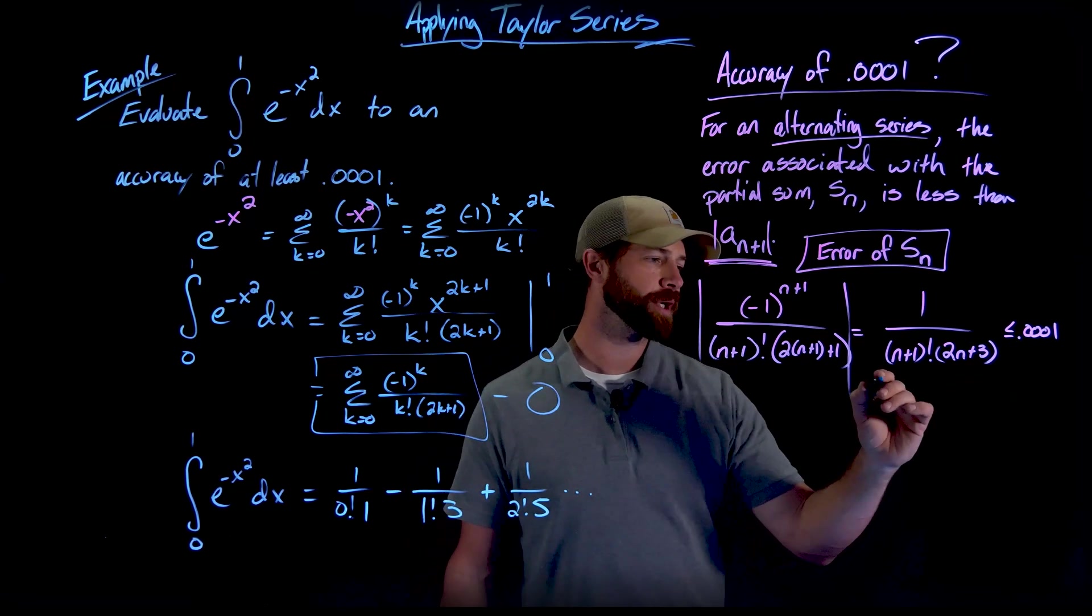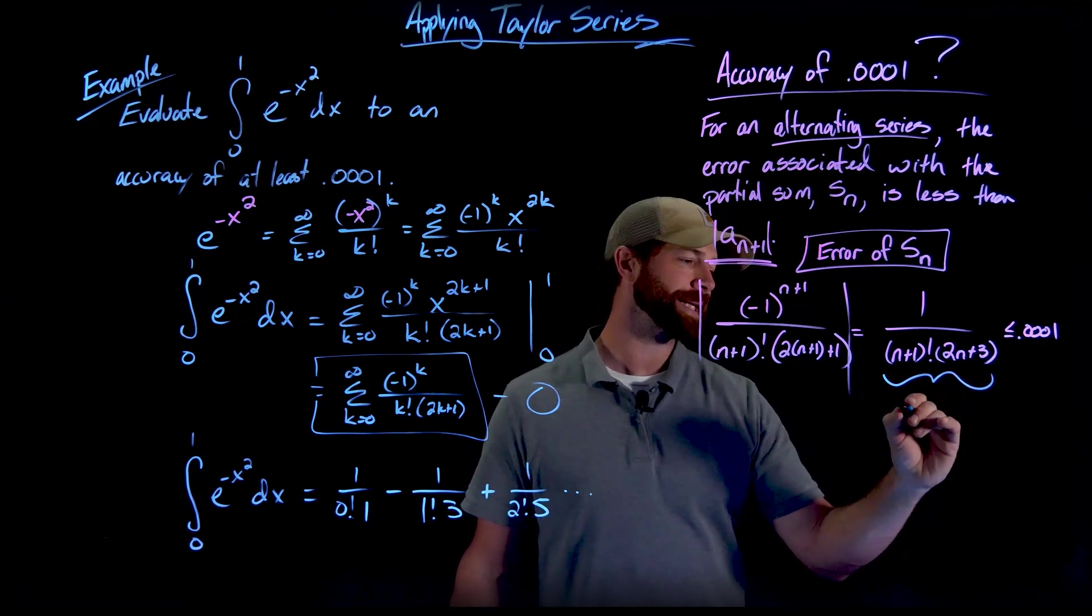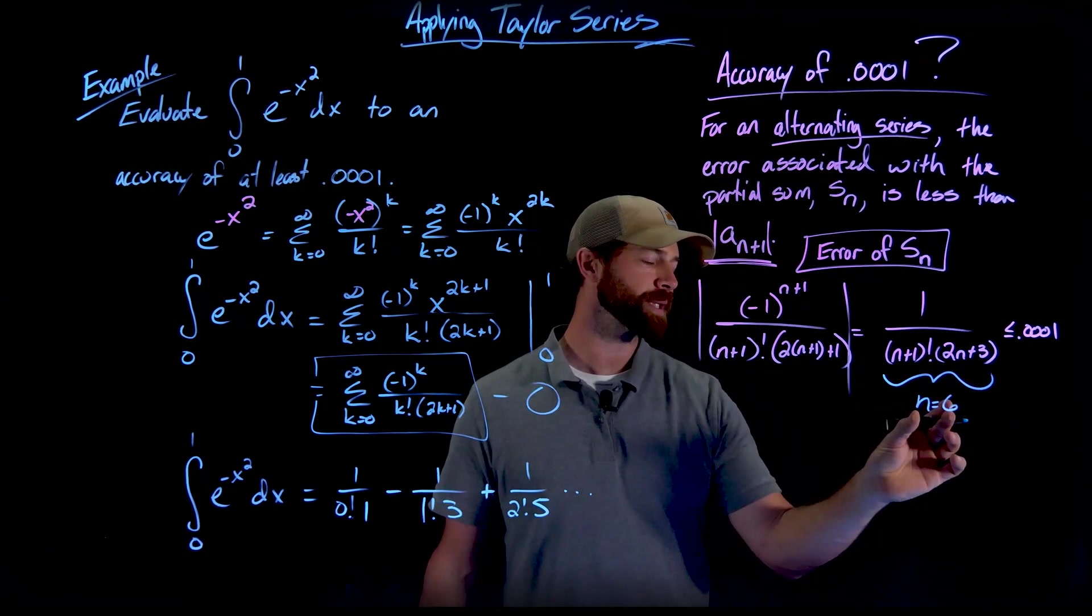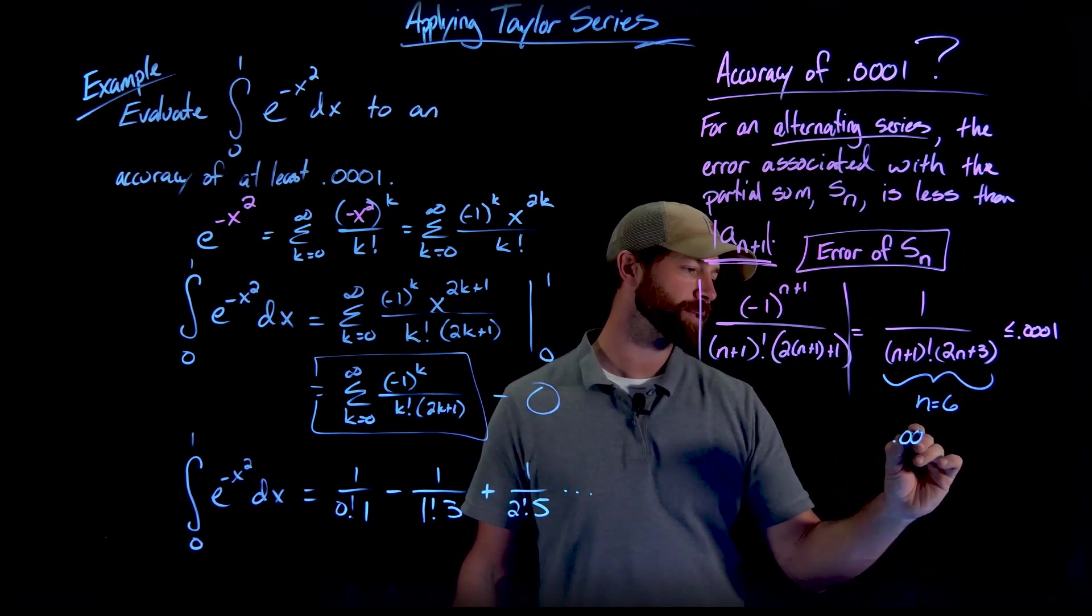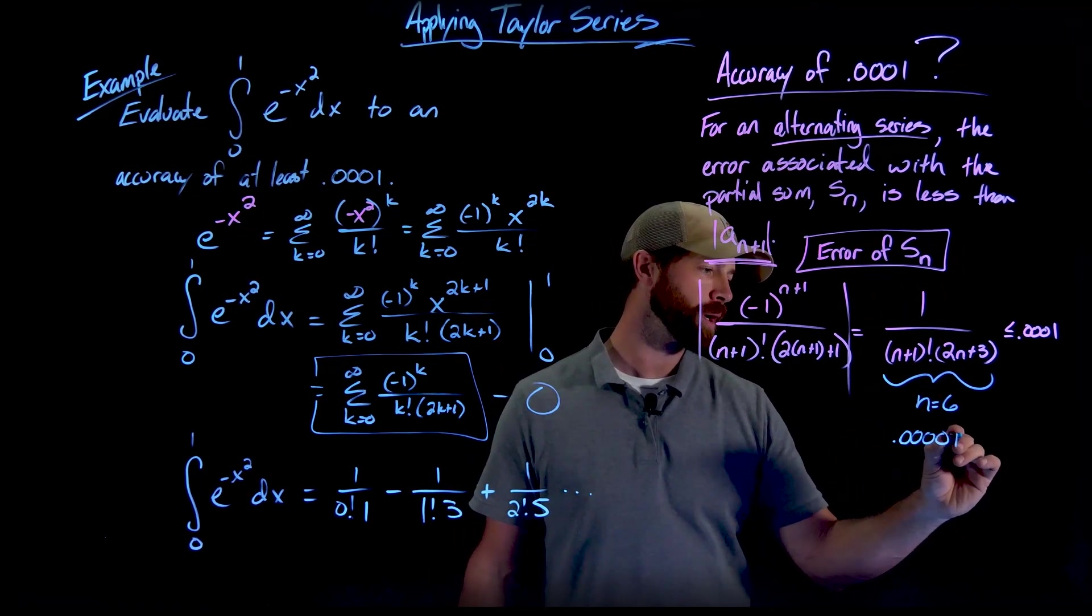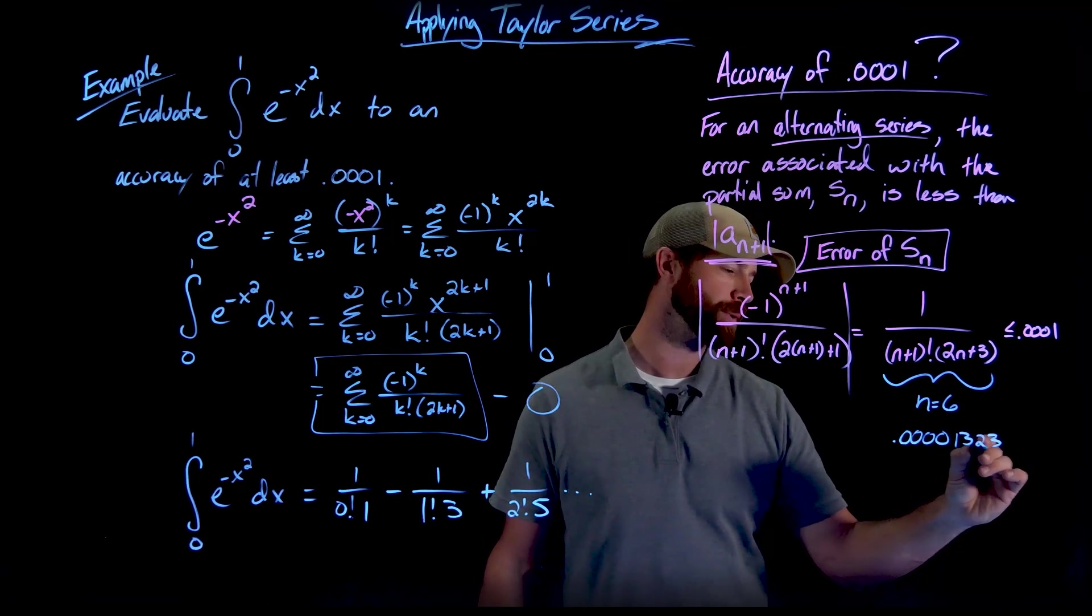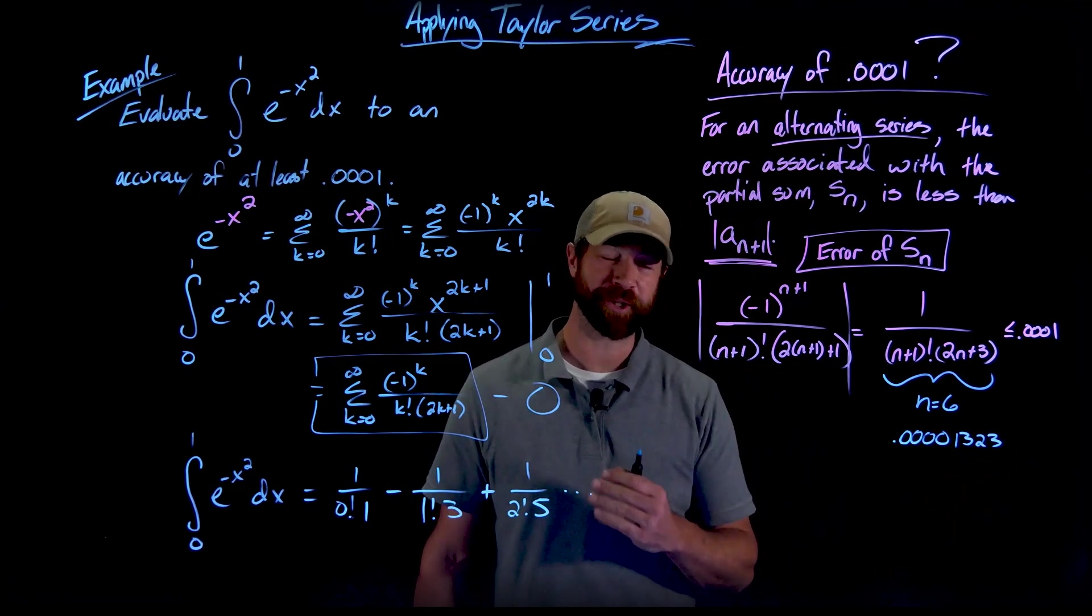And after plugging in a few numbers, what I found is that when this is n equals 6, when this is n equals 6, this expression right here is 0.00001323.